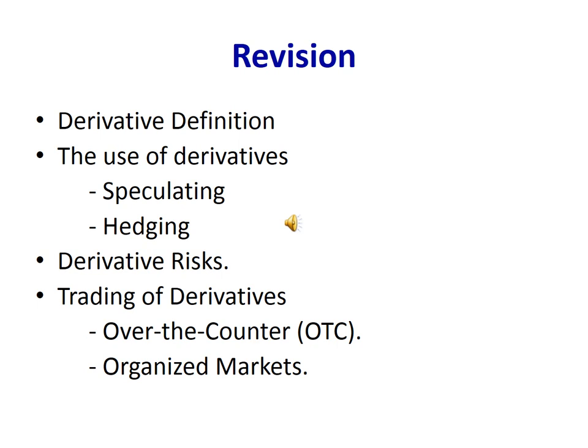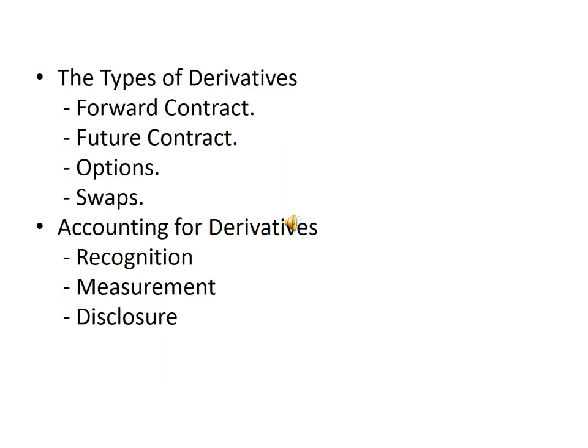Derivative definitions; the use of derivatives — speculating or hedging; derivative risk; trading of derivatives — over-the-counter and organized markets; the types of derivatives — forward contracts, options, and swaps (swaps were not discussed in detail); accounting for derivatives — recognition, measurement, and disclosure.